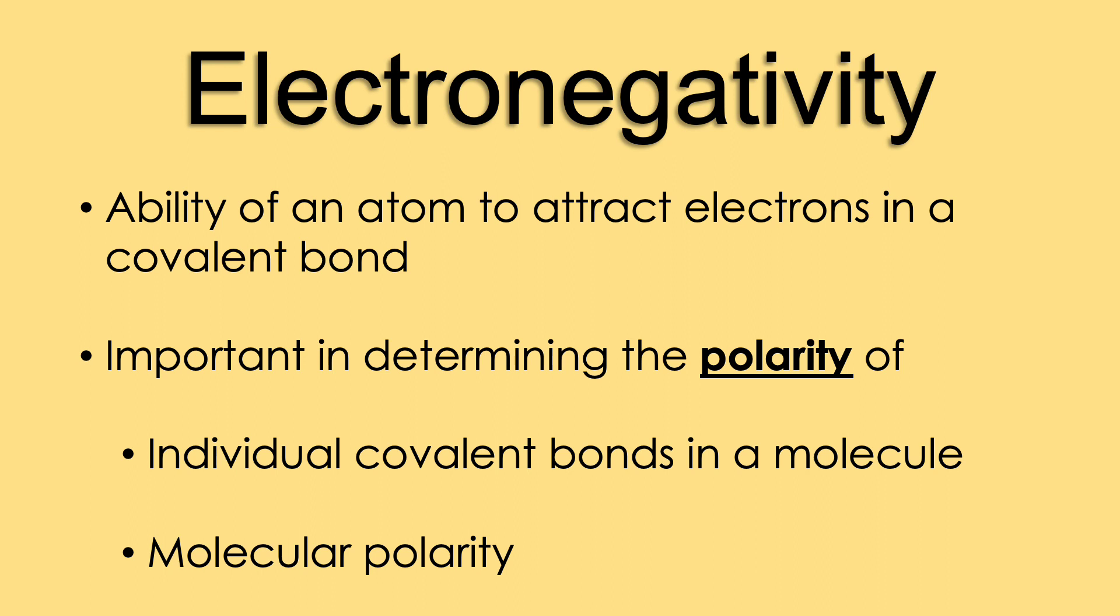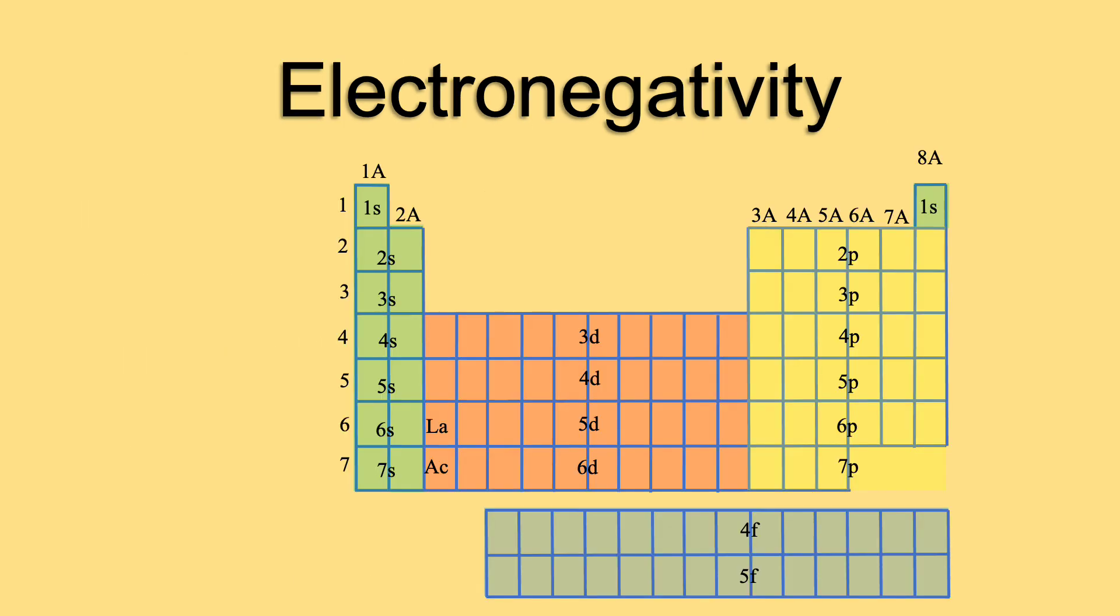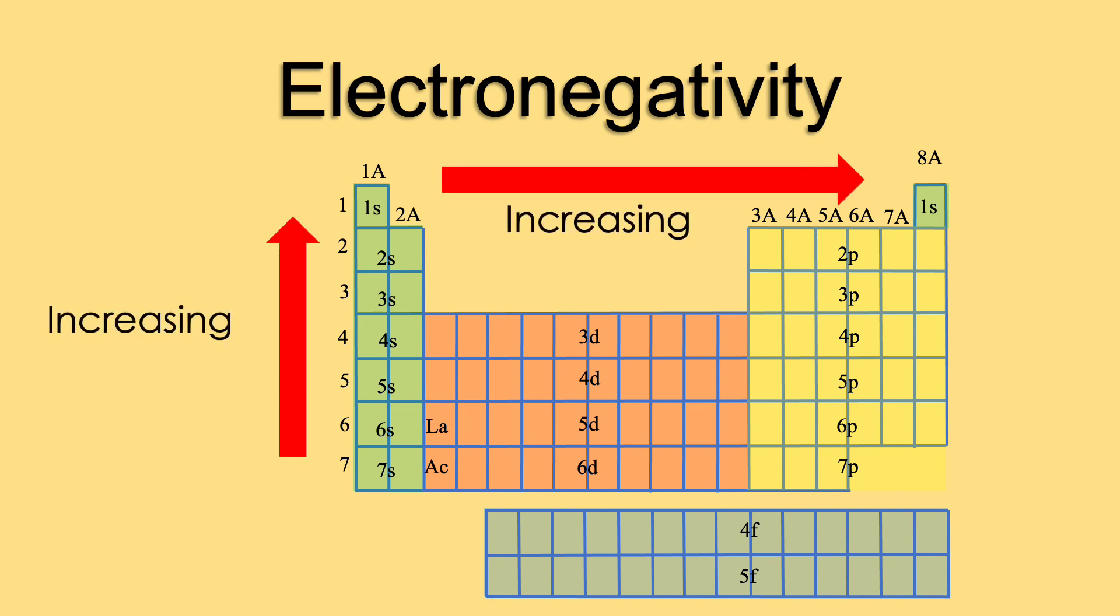Let's explain electronegativity trends in the periodic table. Electronegativity increases going up a group and going from left to right along a period, with fluorine being the most electronegative atom. In most general chemistry classes, students can draw an arrow going from the bottom left-hand corner to the top right-hand corner, indicating an increase in electronegativity.